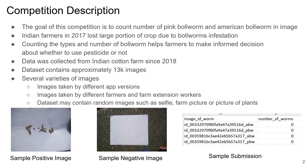Now I'll go over how this competition started and why it's important. The goal is to count the number of Pink Ball Worms and American Ball Worms in an image. In 2017, Indian farmers lost a huge portion of their crops due to ball worm infestation, so in 2018 they started a project to count the number of worms in their crops. Counting the type and number of worms helps farmers make decisions about pesticide use to stop further infestation.